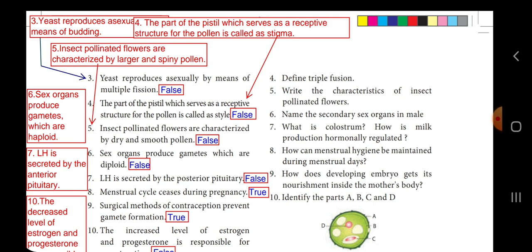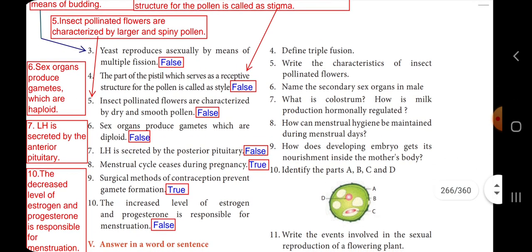Fourth one: the part of the pistil which serves as a receptive structure for pollen is called style — false; it is called stigma. Fifth one: insect-pollinated flowers are characterized by dry and smooth pollen — false. Sixth one: sex organs produce gametes which are diploid — false; sex organs produce gametes which are haploid.